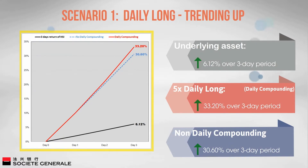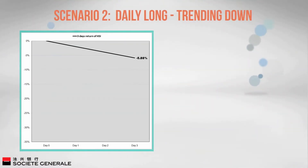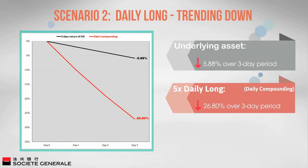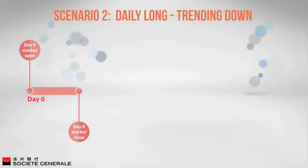Daily long — trending down: Assuming the market is trending down, the underlying asset's daily performance is negative 2% for three consecutive days. The underlying asset has fallen a total of 5.88% over the three-day period. But the five times daily long has fallen 26.8%, which is only 4.56 times the performance of the index (calculated as 26.8 divided by 5.88). This is because each day the loss is taken from a progressively smaller amount.